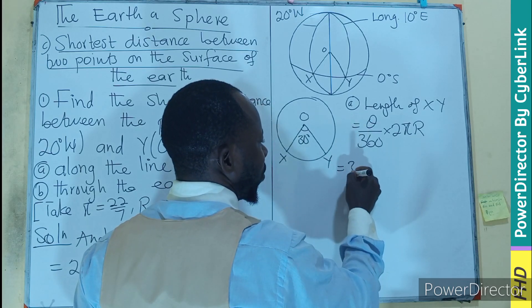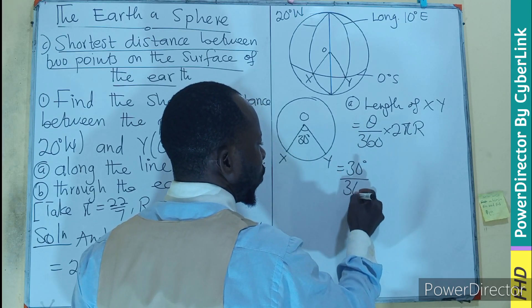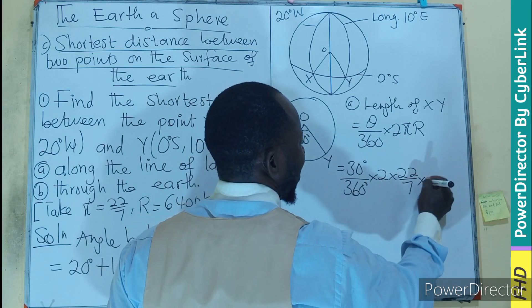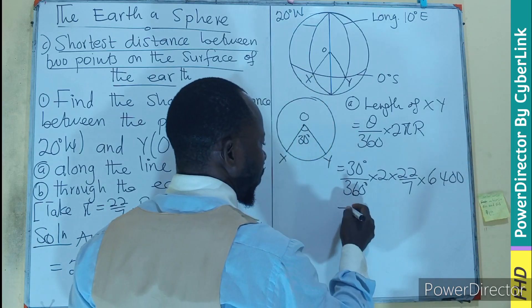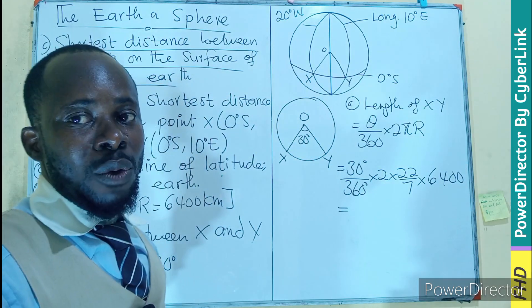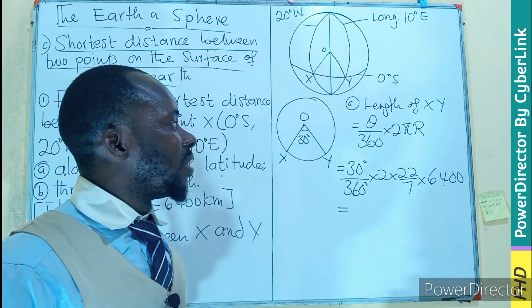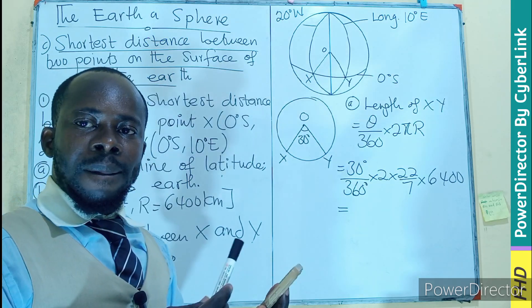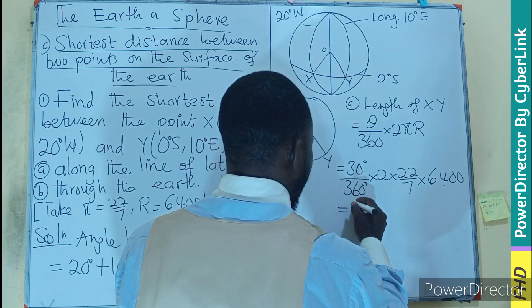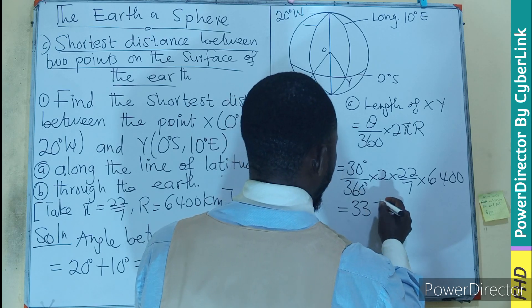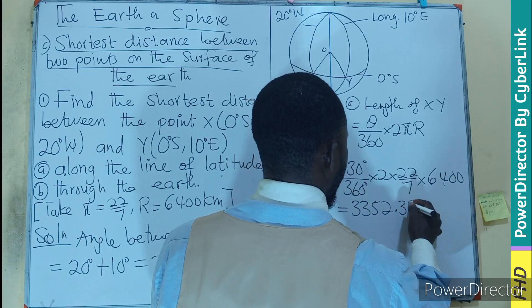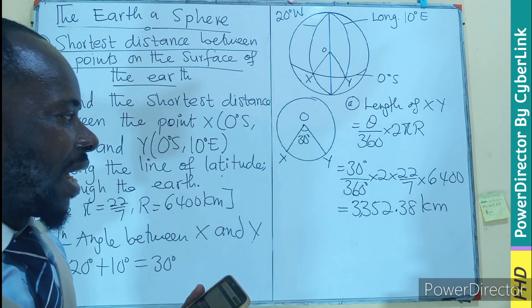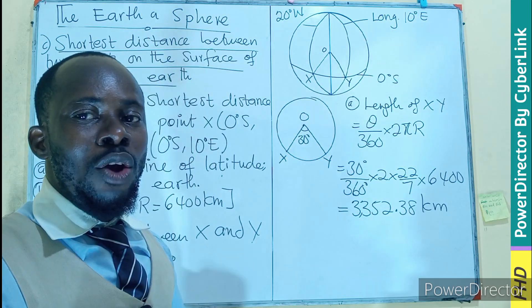Now we are going to do substitution. We know the angle, 30 degrees. We know it is divided by 360, 2 times 22 over 7 times 6400. We can perform cancellation, but we'll just put this in the calculator because we want to conserve space. Let's put it in the calculator and find the answer. And that will be given us 3352.38 kilometers.